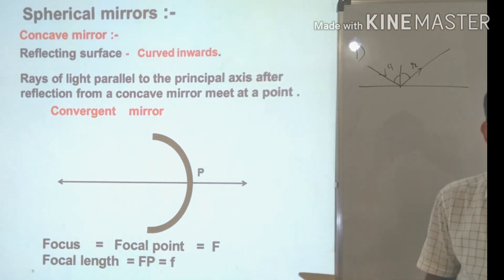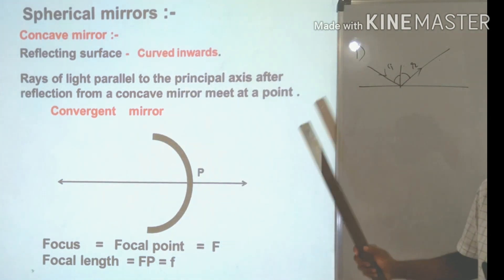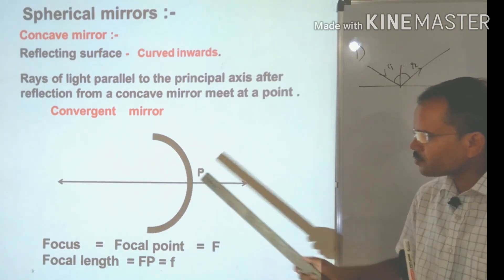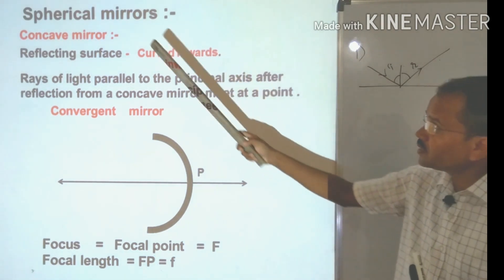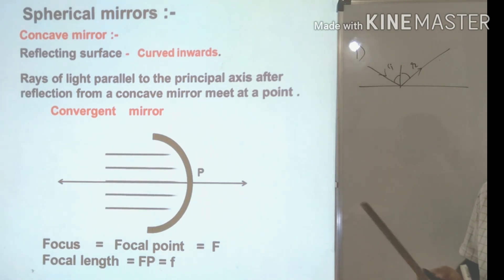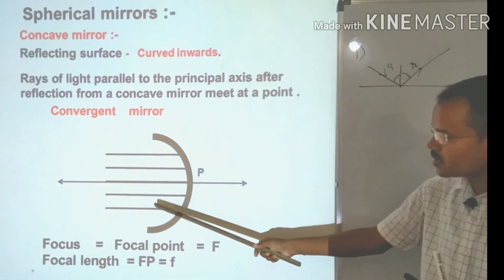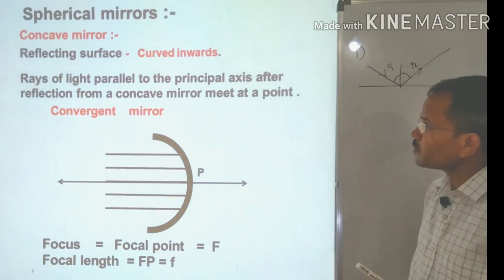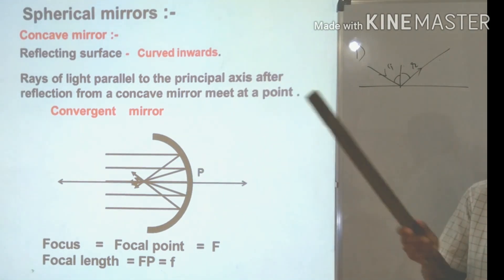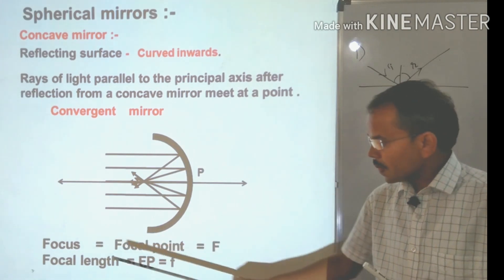Now let us discuss spherical mirrors. We are familiar with plane mirrors, but here we discuss concave and convex mirrors. We look at the reflecting surface: if the reflecting surface curves inward, it is called a concave mirror. When parallel rays are allowed to fall on a concave mirror, after reflection they converge — they meet at one point instead of diverging.